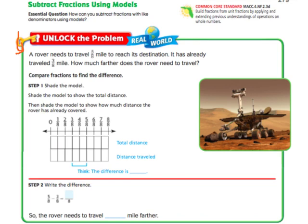A rover needs to travel five-eighths mile to reach its destination. It's already traveled three-eighths mile, so how much further does the rover need to travel?